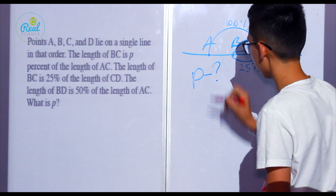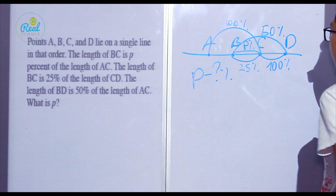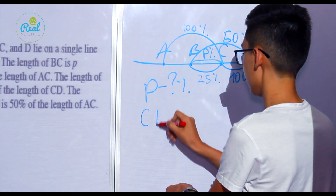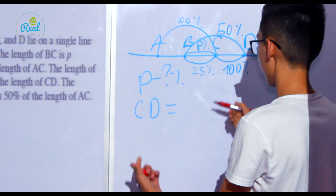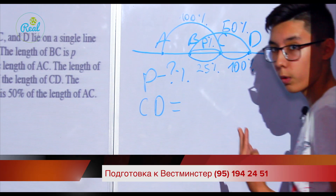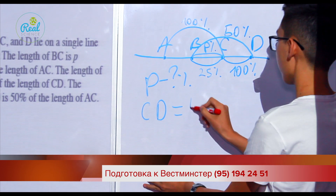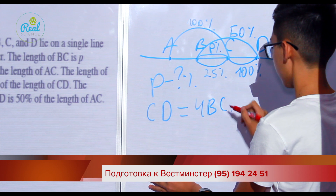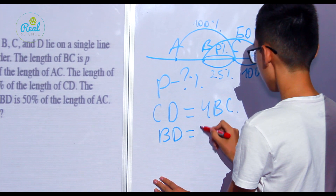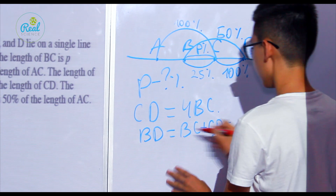First of all, we must find CD in terms of BC. CD is 100 percent and BC is 25 percent, which means CD is four times larger than BC. So CD equals 4·BC.